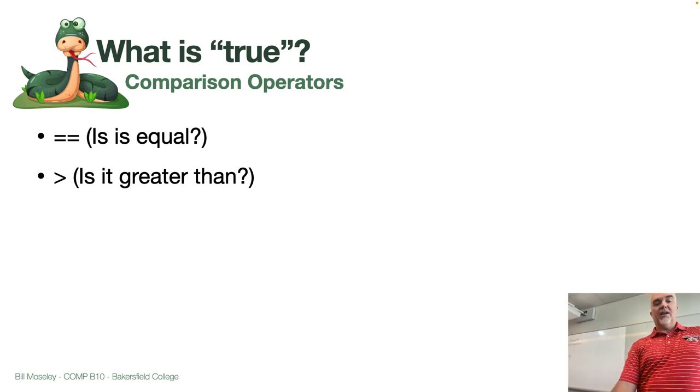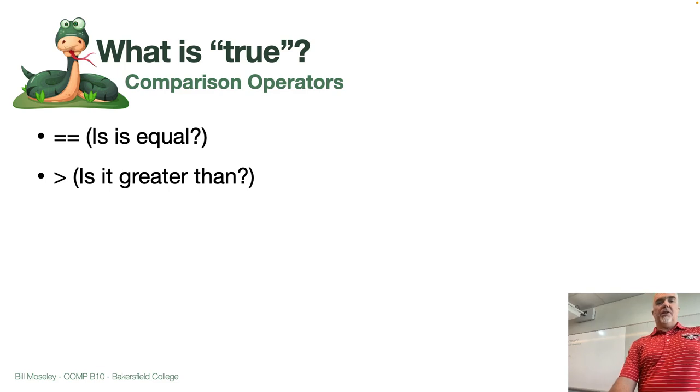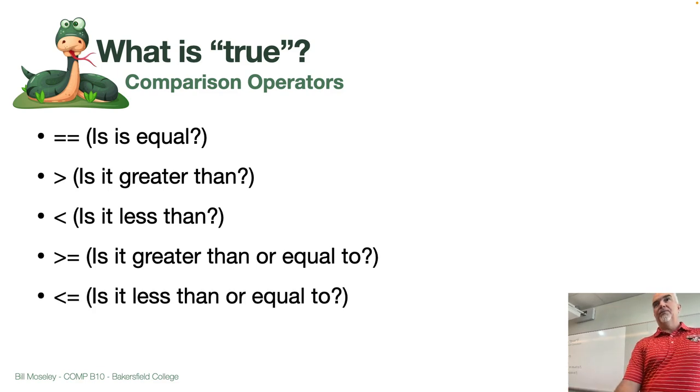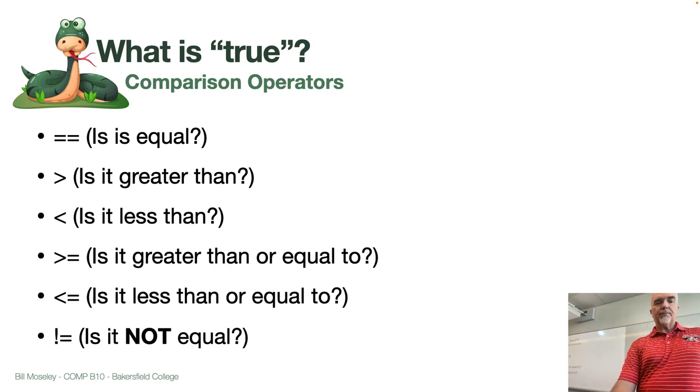So is it equal is what we're asking there. And if the answer is true to that, then it'll execute whatever code is in that code block. So is it greater than? X is greater than five. So if X is six, then it will execute that. Less than, greater than or equal to, less than or equal to. A lot of these should be familiar if you've done some algebra work. This one's probably new all the way down at the bottom. Is it not equal? So this will give a true if the two values are not equal.